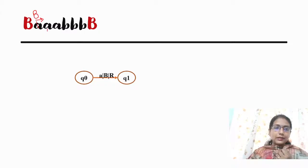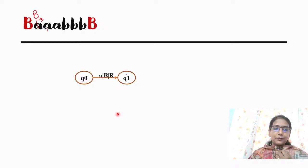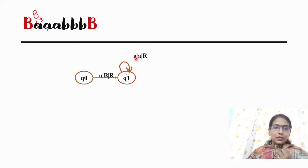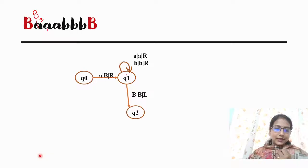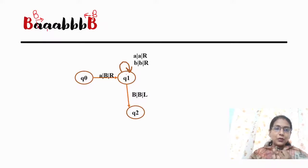I will replace A with blank and move to the right. If I move right, I will change state to Q. If I see A again in the new state, I keep moving right. I continue moving right through A's and B's. When I find the first B, I replace B with blank and move left.